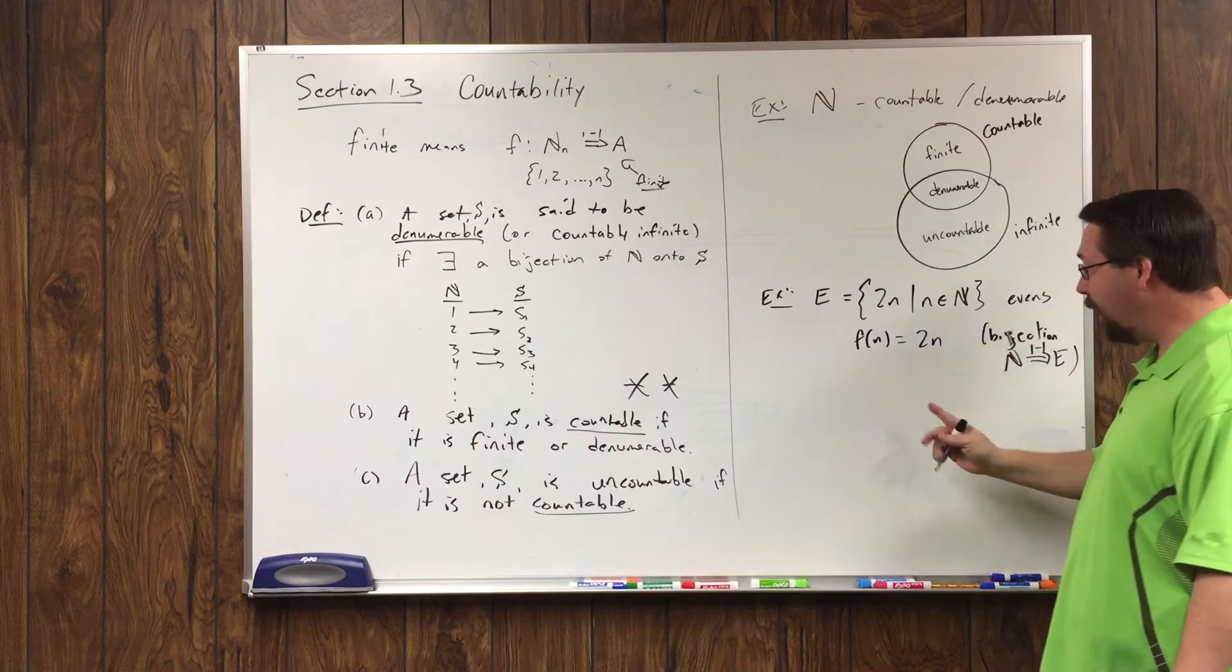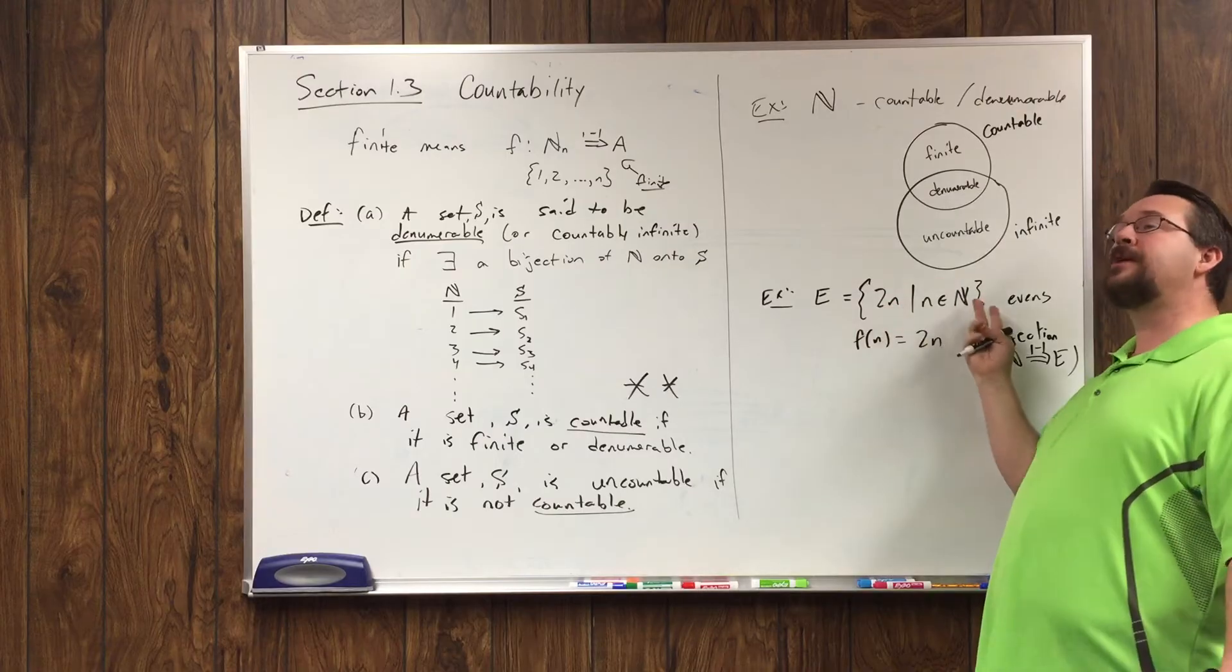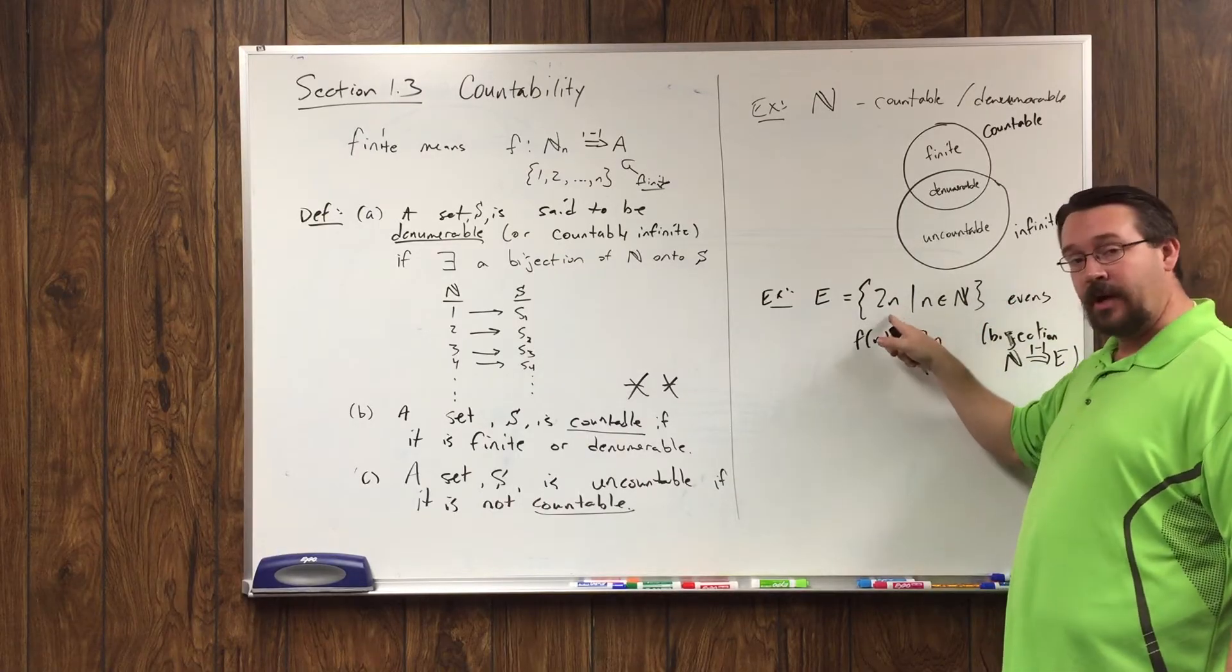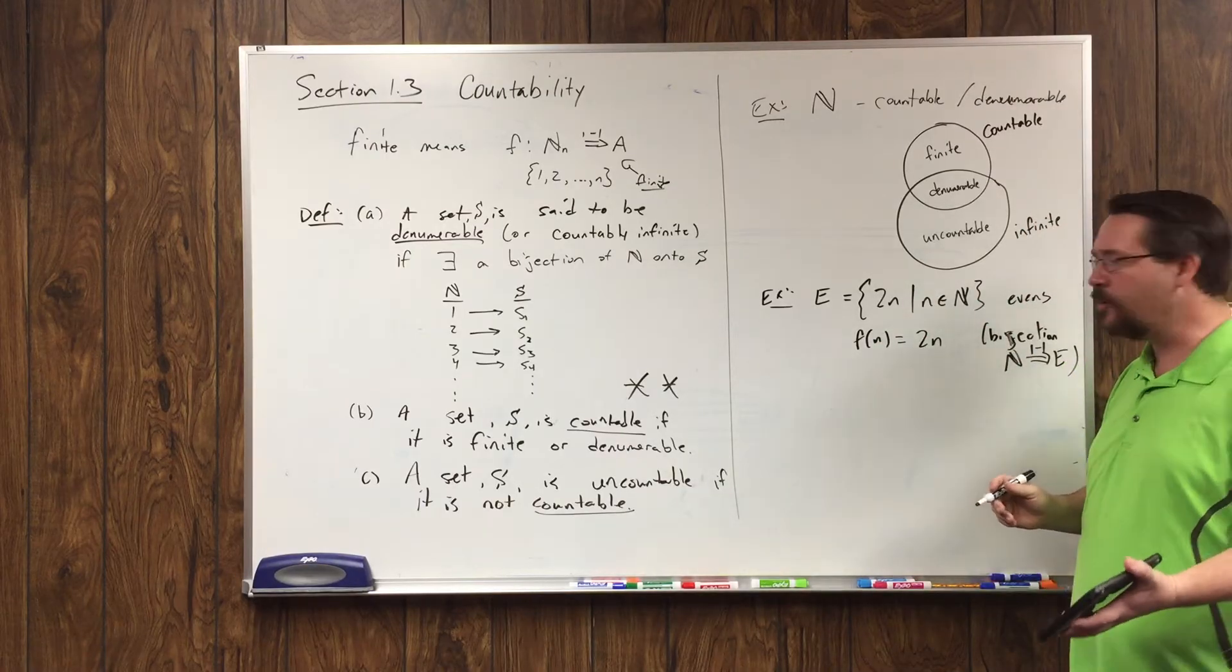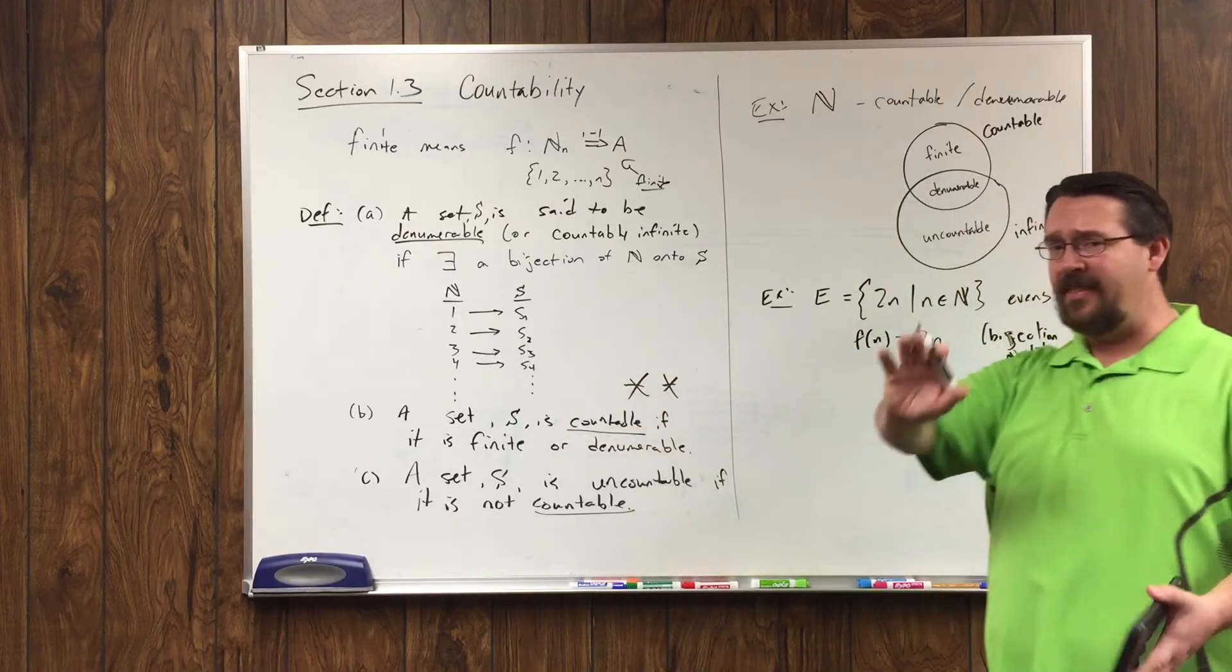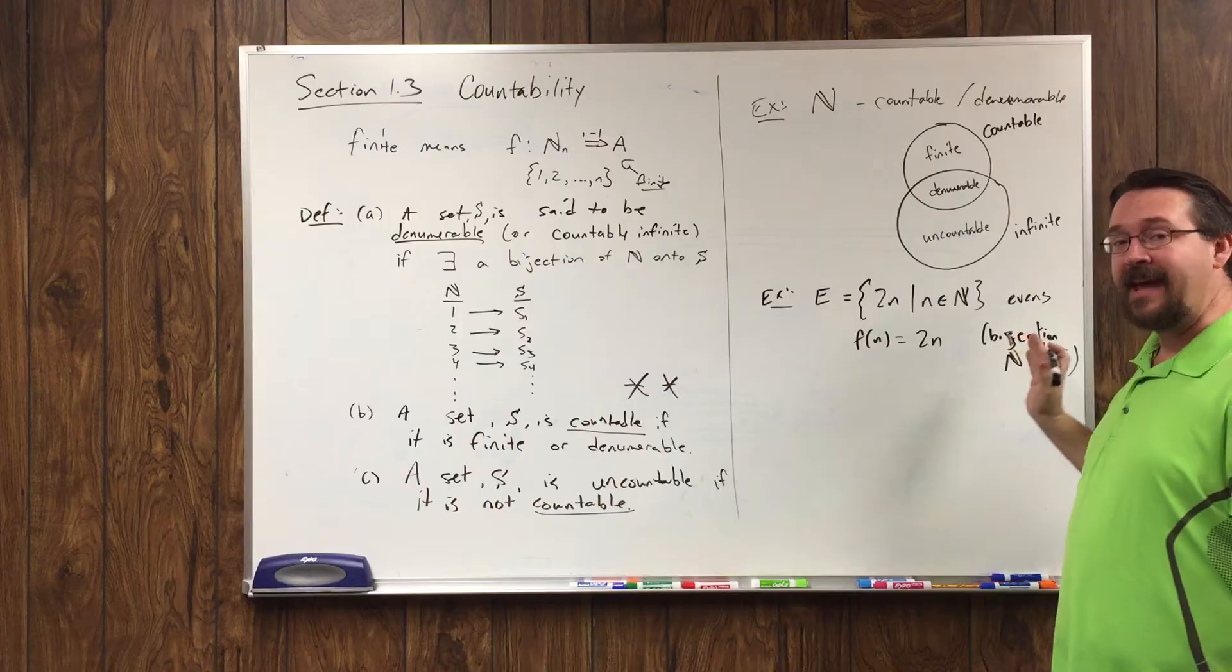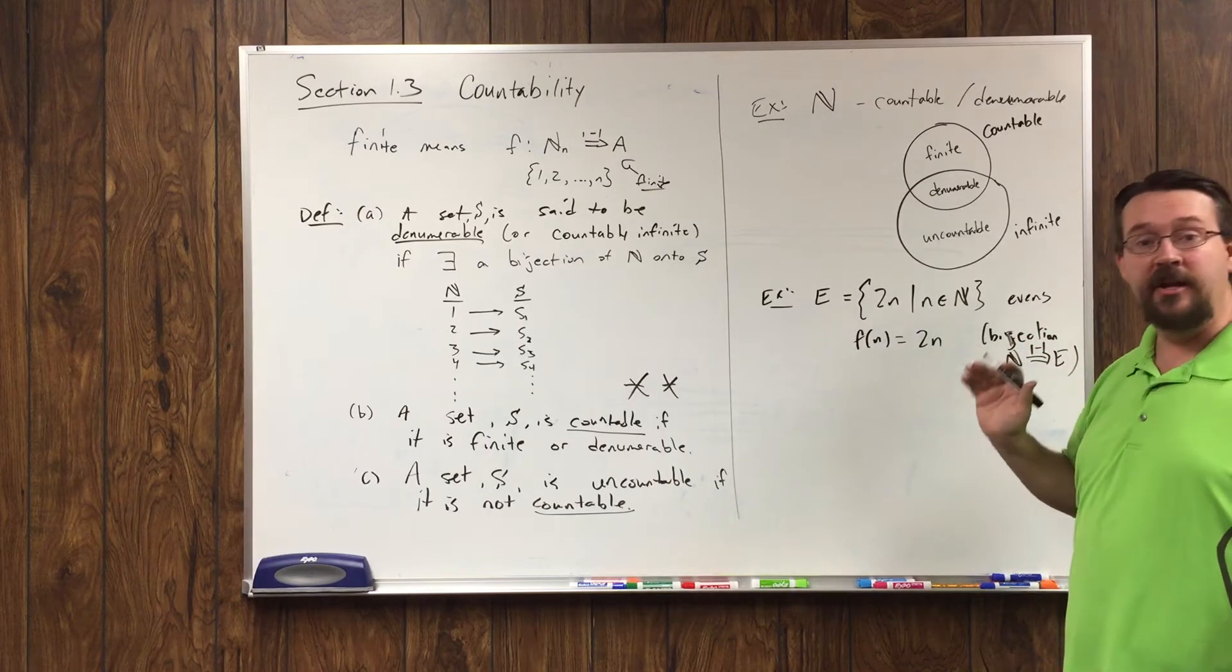It's 1 to 1 because this gives you a unique output that as you plug in a natural number, no two natural numbers will map to the same element of E, and it's onto because every even number can be written in this form. So, that's the bijection. Another way to think of denumerable sets is if you can start listing them as I did here, and then basically say that I'm going to continue on in the same pattern, and you can verify or prove that every element of the set is then listed, then you're done. You've proved that it's denumerable.